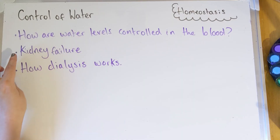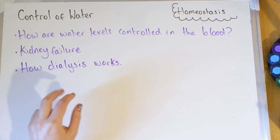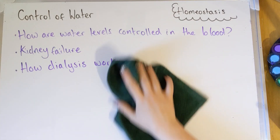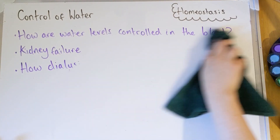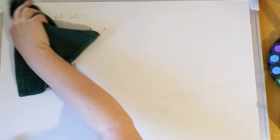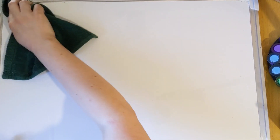Hi everyone, welcome back. We're carrying on with homeostasis again today, looking at the control of water and kidney failure. We're going to be covering how water levels are controlled in blood, kidney failure itself, and how dialysis works. As always, grab some paper, grab some pens and follow along with me.